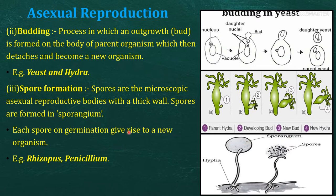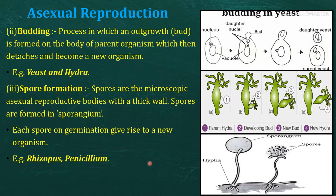Next is spore formation. In spore formation, spores are formed inside the sporangium and separate from the parent organism. They then fly out and wherever they land, they germinate as a new organism. Spore formation involves microscopic asexual reproduction bodies with thick walls. Spores are formed in the sporangium, separate from the parent organism, and on germination give rise to a new organism. Examples include rhizopus and penicillium.